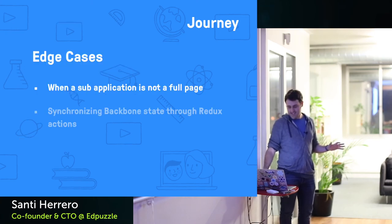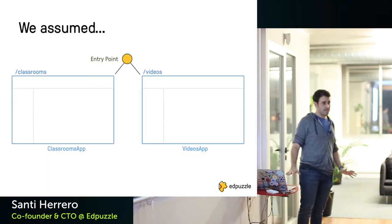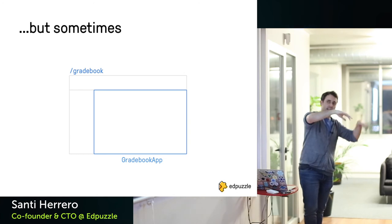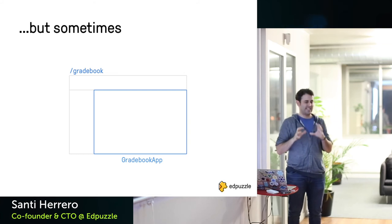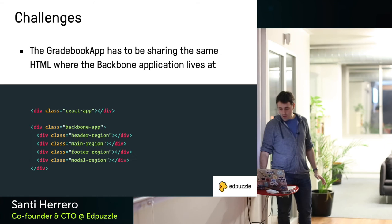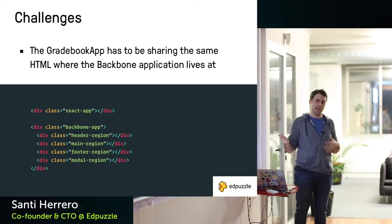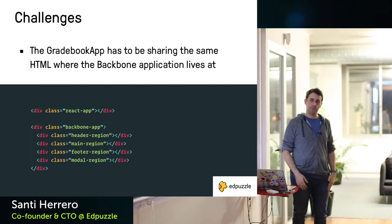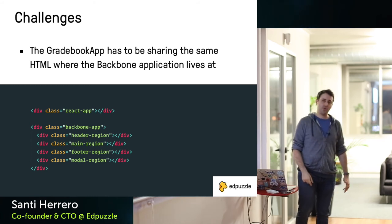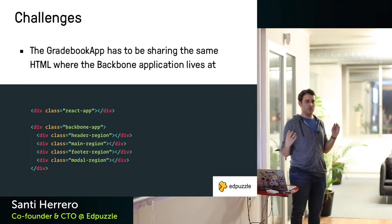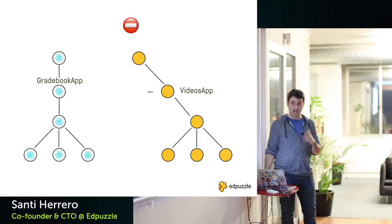Edge cases: first, when a sub-application is not a full-page app. We assumed it covered the full screen, but in complex apps this doesn't always happen. For example, we have a gradebook that lives within the classroom view — there are classes on the left, navigation on top — and the gradebook is very state-heavy. We want to do it in Redux from the start, but it can't live separately in the React app since it shares the screen with Backbone and Marionette. Doing z-index tricks doesn't sound fun.